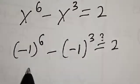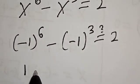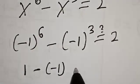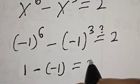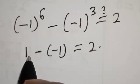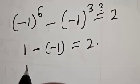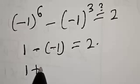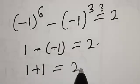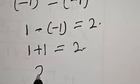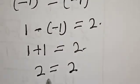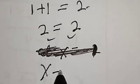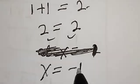Minus 1 raised to power 6 is 1. Minus 1 raised to power 3 is equal to minus 1. So we have 1 minus minus 1, which is 1 plus 1, and this is 2, equal to 2. We satisfy the given equation at s equal to minus 1.